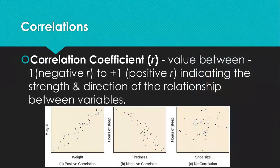A correlation coefficient is a value between negative one and one indicating the strength and direction of a relationship. A positive correlation shows an increasing slope; a negative correlation shows a decreasing slope; and no correlation shows no clear line. When judging a correlation coefficient, you look at the absolute value — ignoring whether it's positive or negative. The closer the value is to one, the stronger the relationship. The plus or minus simply indicates whether the slope goes upward or downward.